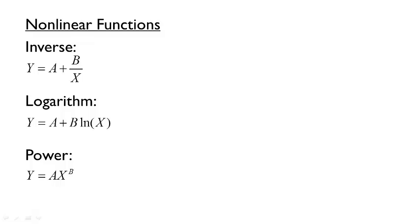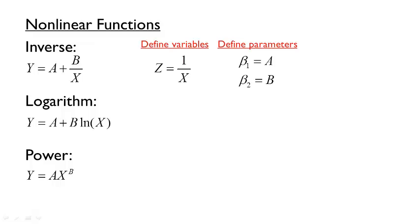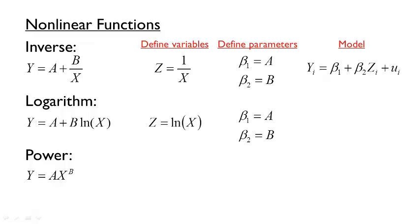The inverse relationship is already linear in parameters. If we define a new variable z equal to the multiplicative inverse of x, and rename a and b to beta 1 and beta 2 respectively, we can rewrite the inverse relationship as a linear econometric model. For the logarithm function, we can similarly define a new variable z equal to the natural logarithm of x, and again end with a linear model.